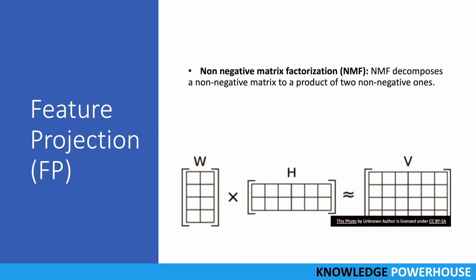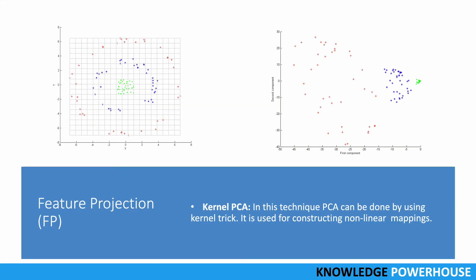Then we have Kernel PCA. Again, this is another technique of PCA, like a variation of that. Here we use the kernel trick. In this kernel trick, let's say if we have an example where we have data which is in circles - blue circle, red circle, green circle - and it's so difficult to distinguish or classify this data, we can use a kernel function.